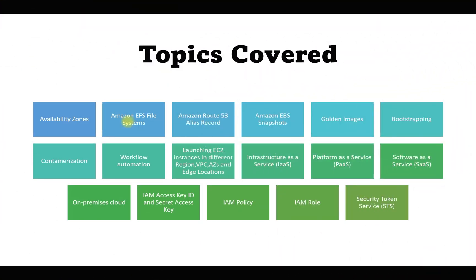Before going through the questions, let's understand what topics are covered in this video. We have covered questions related to availability zones, EFS file system, Route 53, EBS snapshot, golden images, bootstrapping, containerization, and workflow automation like AWS OpsWorks. We will also understand when launching EC2 instances in different regions, VPCs, availability zones, and edge locations — what happens and which is used for which scenario.